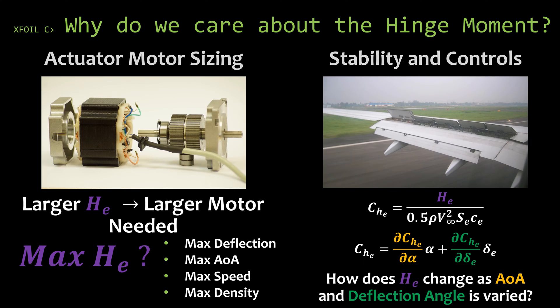So why do we care about the hinge moment? The first reason is that we need to overcome that hinge moment if we want to deflect the control surface to the desired angle, or counteract it so we can hold it at zero when we're at an angle of attack. This means we need an actuation system that is more powerful than the aero loading. If we have a larger hinge moment, we're going to need a larger motor. We try to determine the max hinge moment we can experience in flight so we can find the minimum size motor needed. We might look at things like the max deflection, max angle of attack, max speed, and maximum altitude.